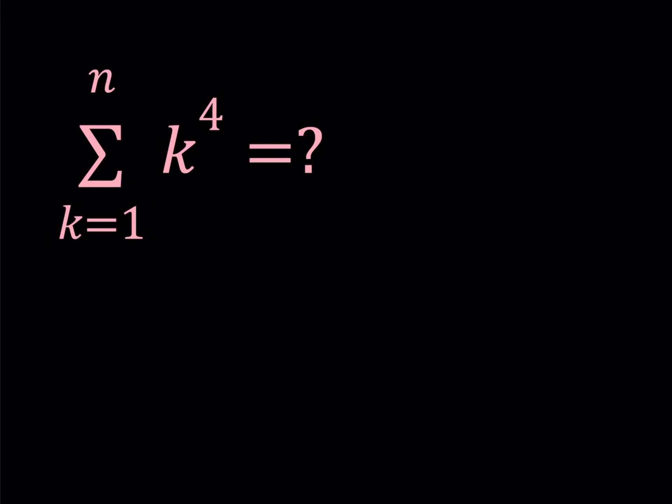Hello everyone. In this video we're going to be evaluating the sum of the fourth powers of consecutive integers 1 through n. So what this means is we have 1 to the fourth power plus 2 to the fourth power, all the way up to n to the fourth power. This is what we're trying to find in terms of n.